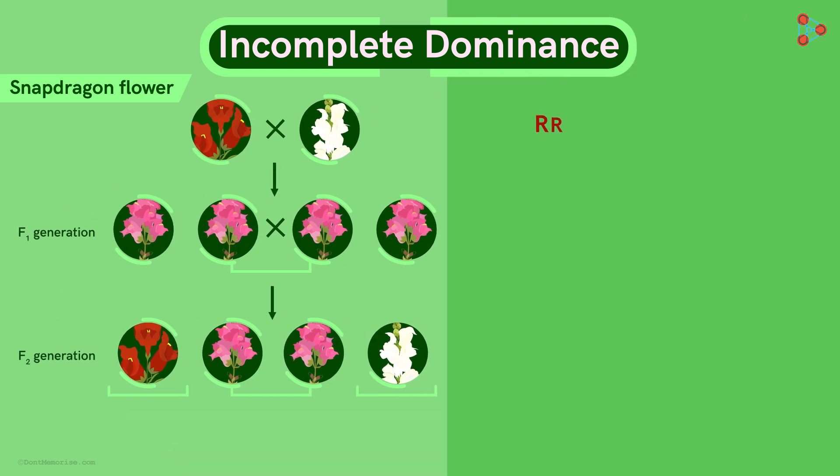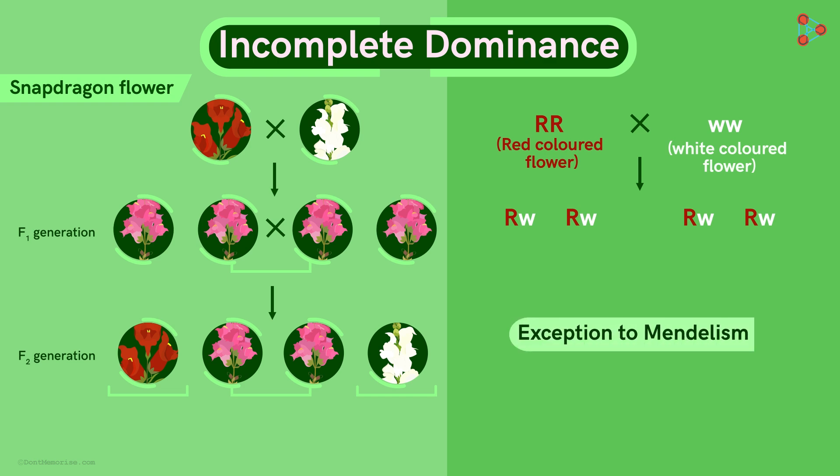Let's assume RR in capital to be the genes for the red coloured flower. Let WW in lowercase be the genes representing white flowers. On crossing the two, we get all the pink flowers with the genotype RW. Now till this step, we find the inheritance to be an exception to Mendelism.